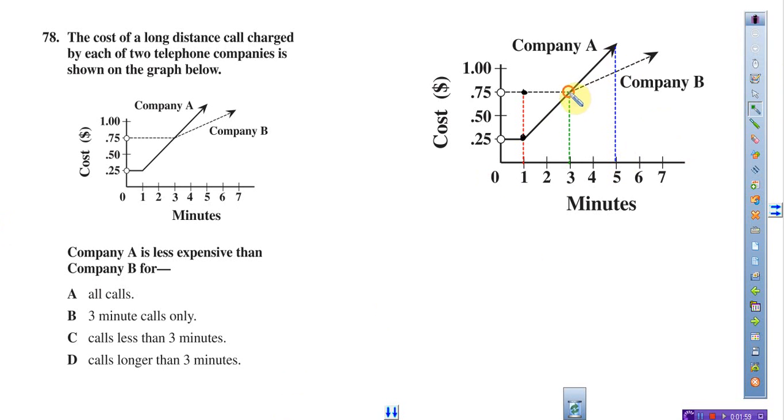At minutes four and five, we have option A being more expensive than option B. I know it's more expensive because look at the price for each given line here.